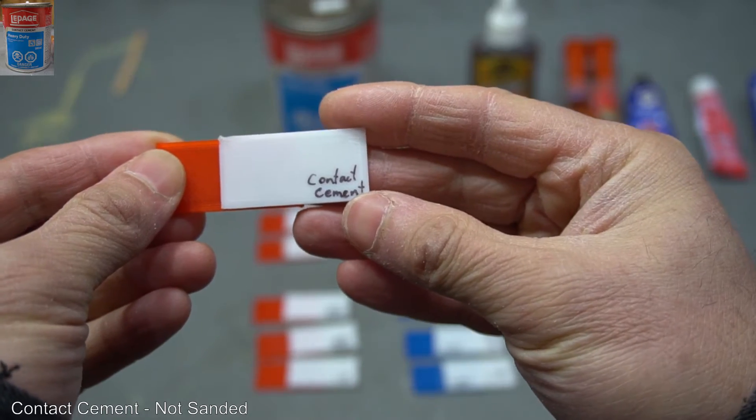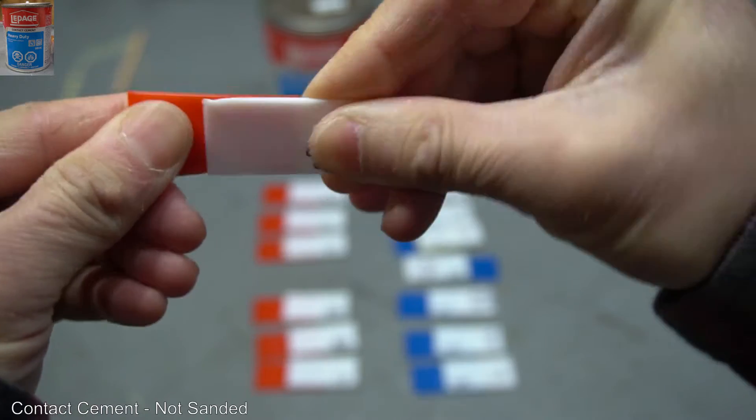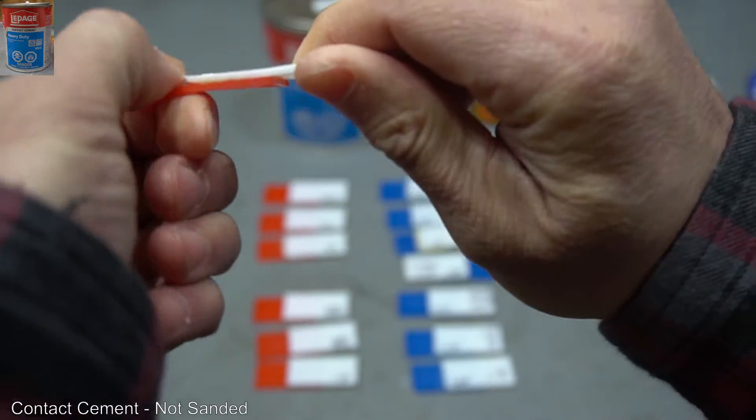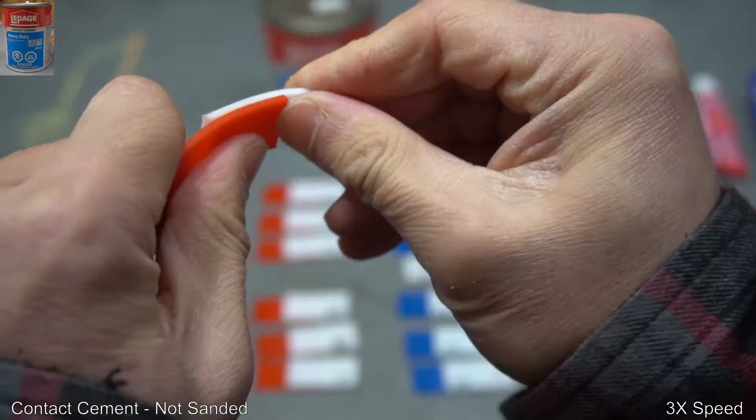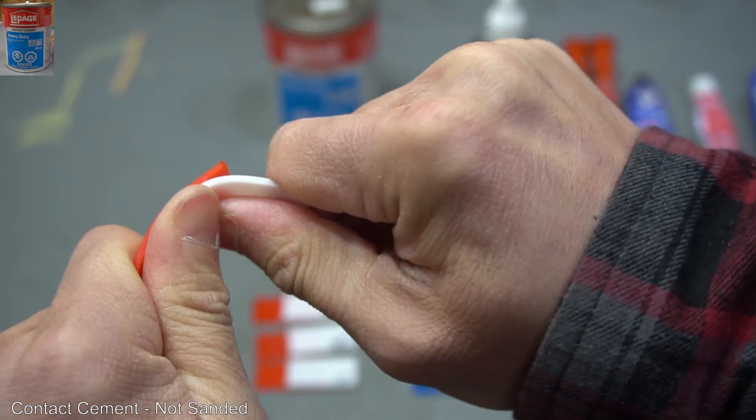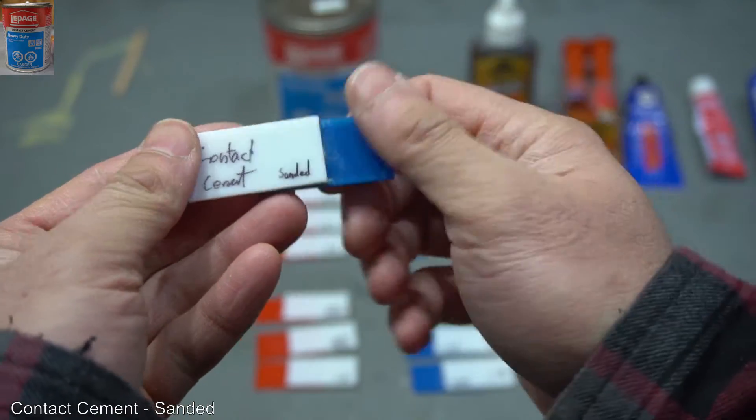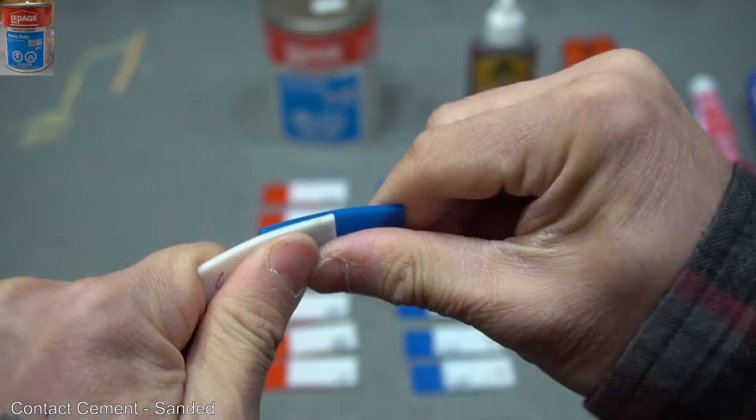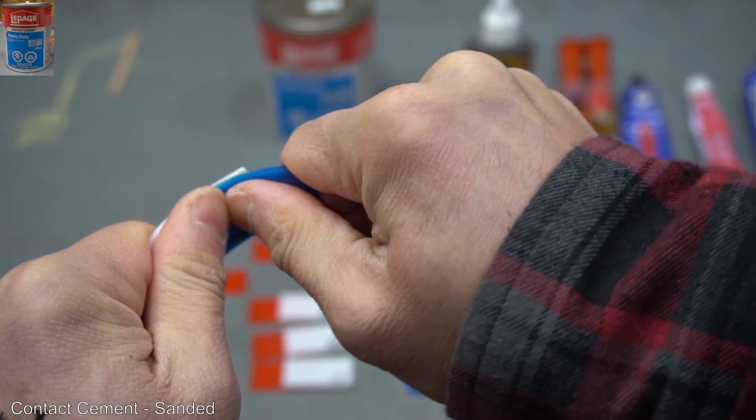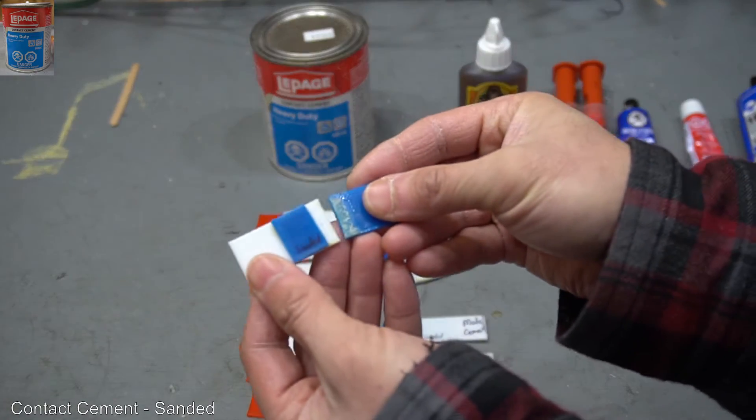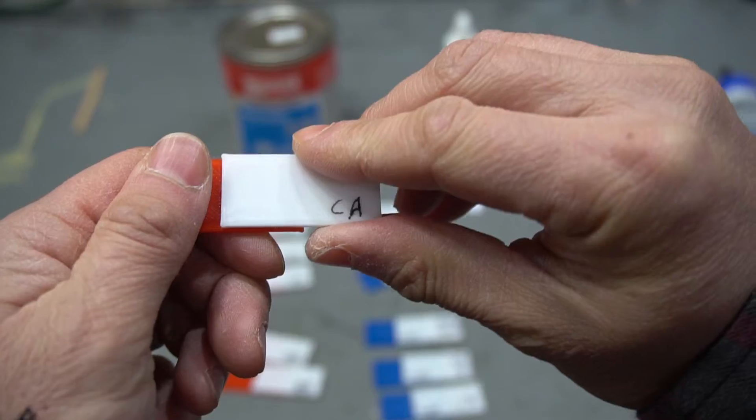Alright, contact cement non-sanded. So just by pulling, it's holding. Let's try twisting. So contact cement sanded. So both the contact cement sanded and unsanded held up very well.